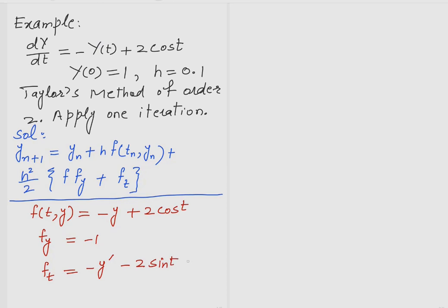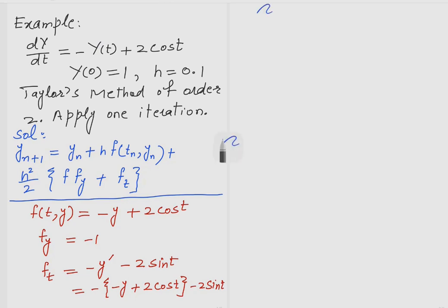Here y' means dy/dt. When the numerical method is applied, it becomes capital Y. So f_t = -y' - 2sin(t). We substitute y' = dy/dt = -y + 2cos(t), giving f_t = -(-y + 2cos(t)) - 2sin(t) = y - 2cos(t) - 2sin(t).